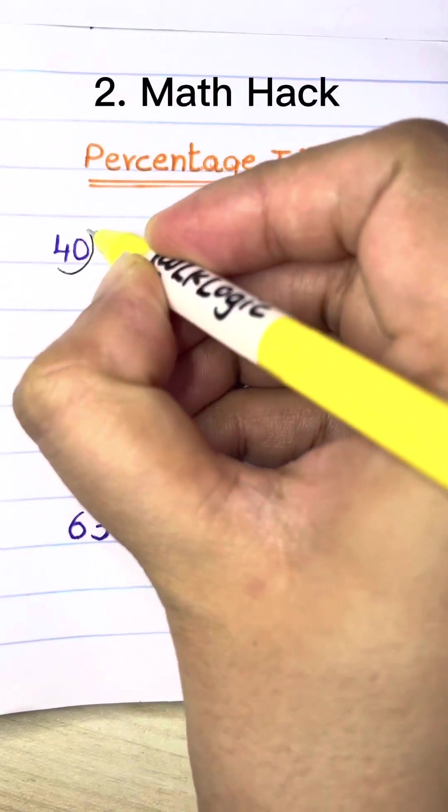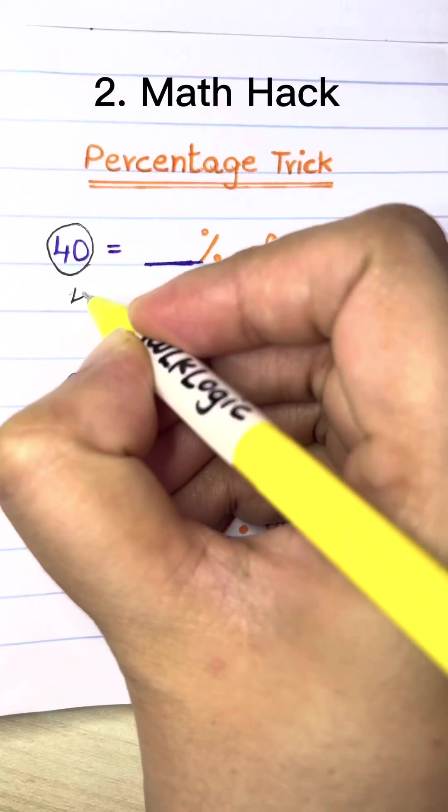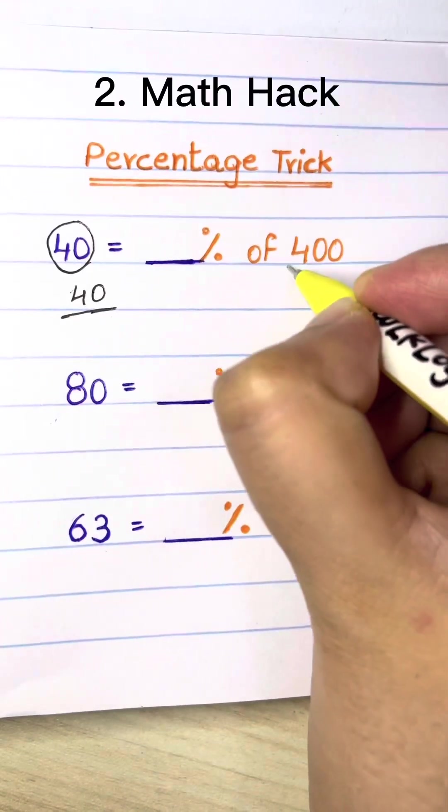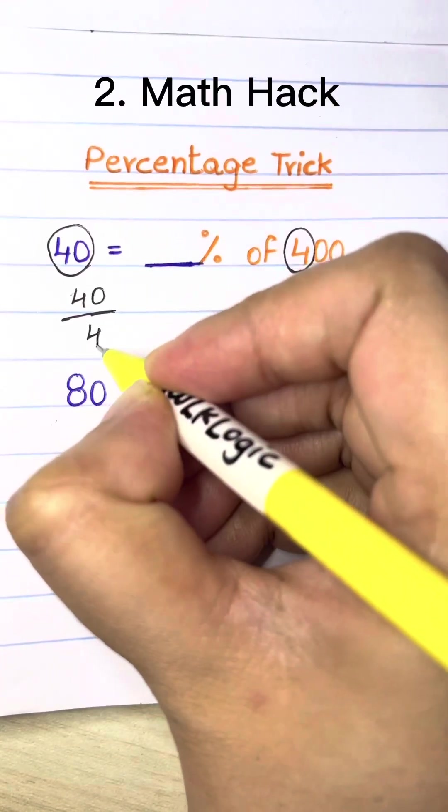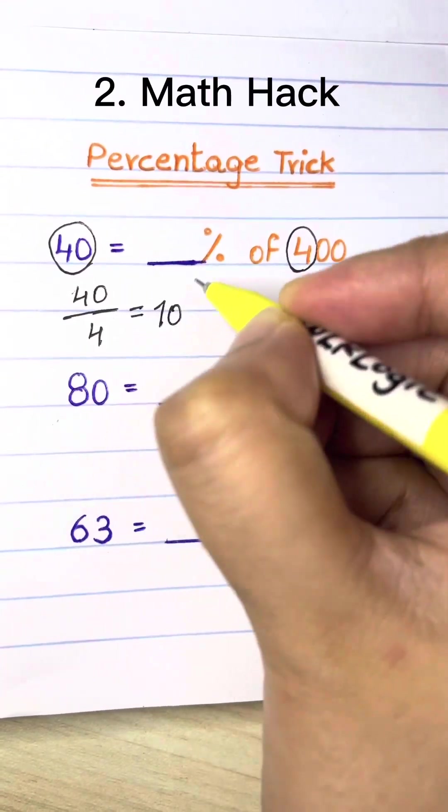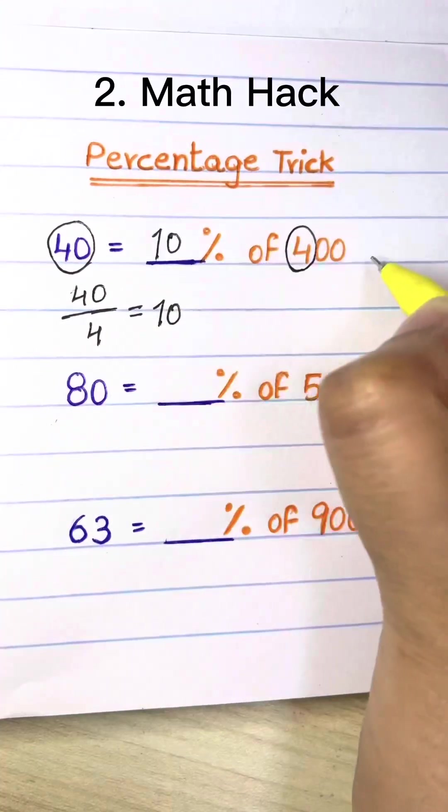40 is what percent of 400? Just do 40 divided by 4. That gives you 10. So 40 is 10% of 400.